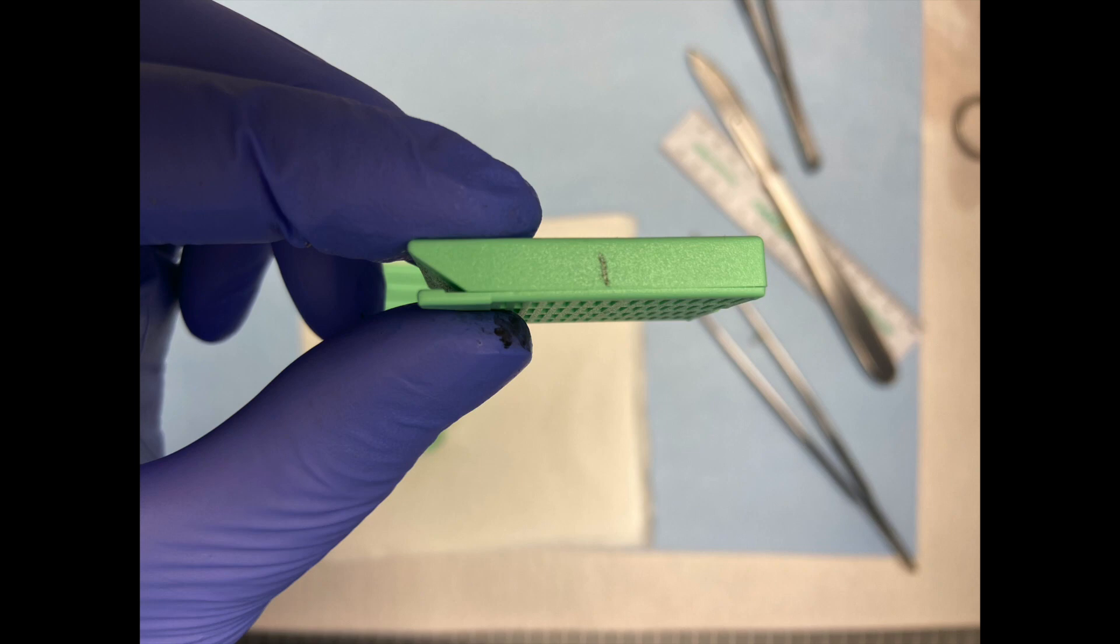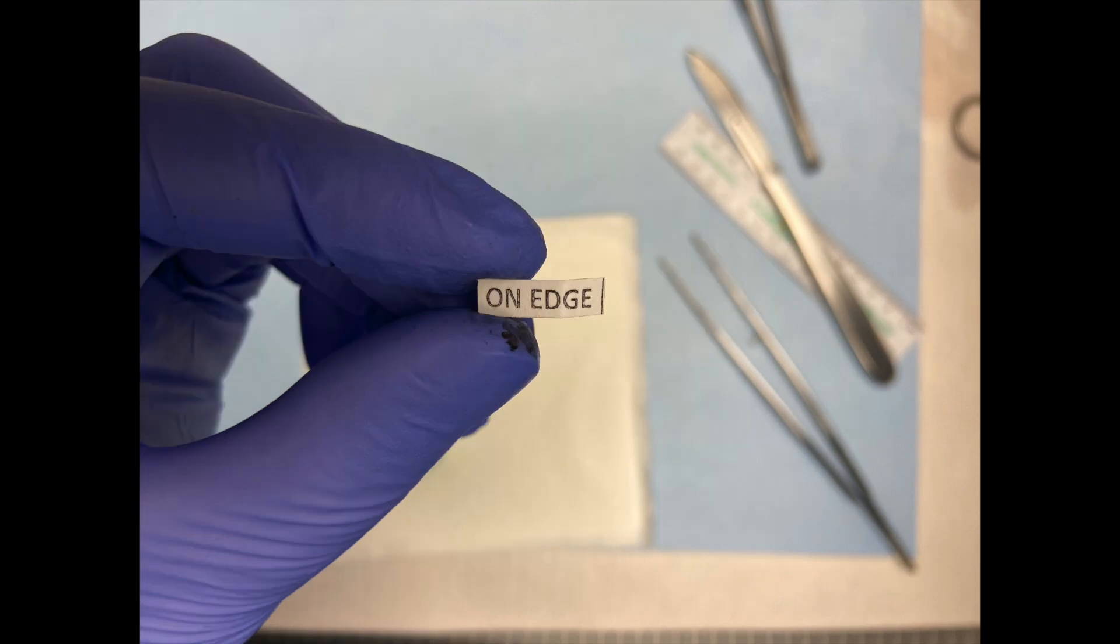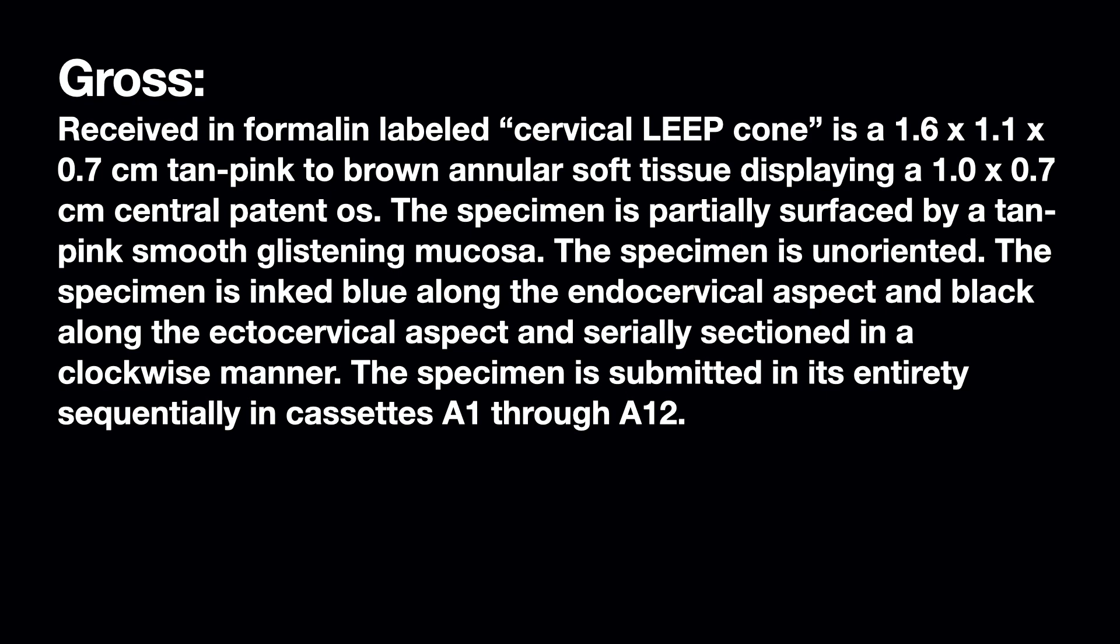Some other things that I do to make it easier for histology is I write the number of pieces on the side of the cassette. And then I'll also put in a little piece of paper that says on edge to show the histotech that I want this on edge just in case the piece has shifted in the cassette while it's been processing. And I do those things on most biopsies, and I write the number of pieces on every biopsy cassette anyway. Obviously, I only do one piece for the LEEP per cassette. So, I'll write one on all the cassettes.